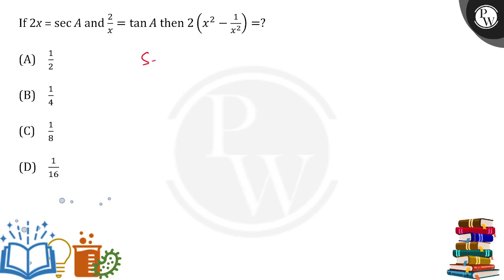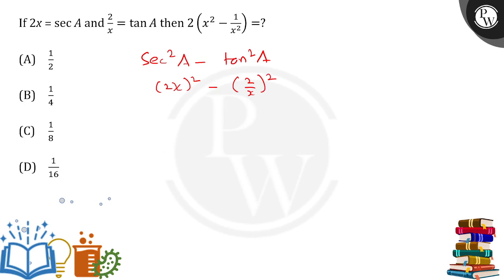We are going to do sec squared a minus tan squared a. Sec of a is simply 2x whole square, minus tan squared a, where tan of a will be 2 upon x whole square, and this is equal to 1.